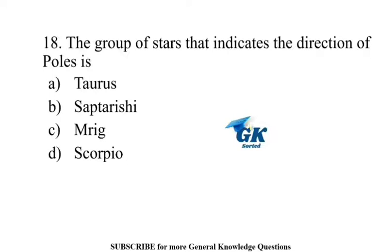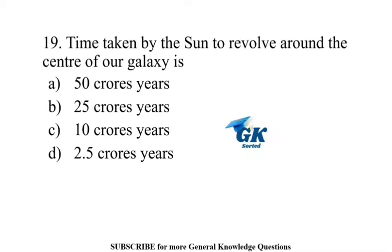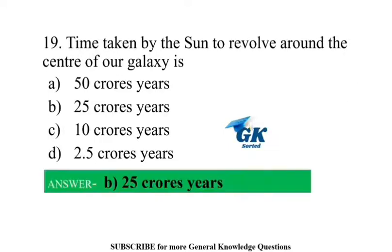The group of stars that indicates the direction of poles is Sapta Rishi. Time taken by the Sun to revolve around the center of our galaxy is 25 crore years.